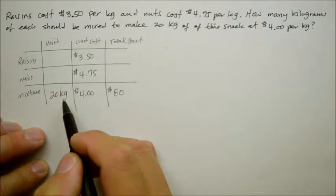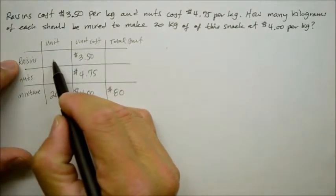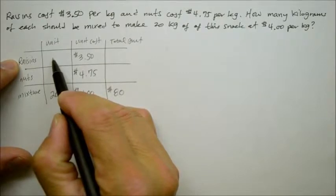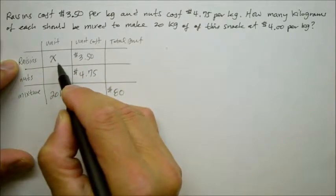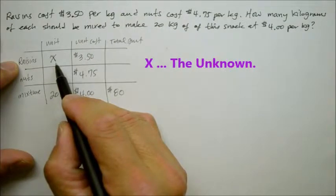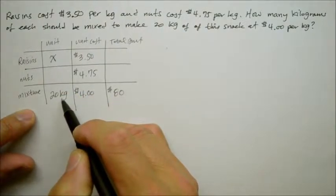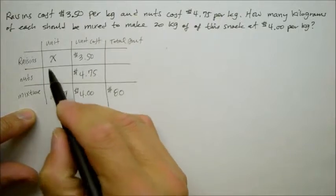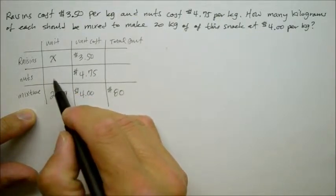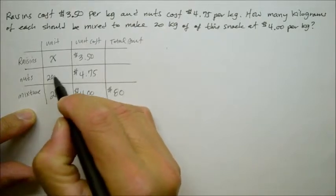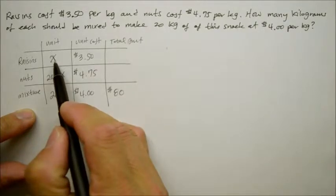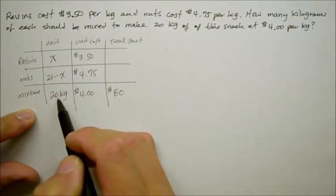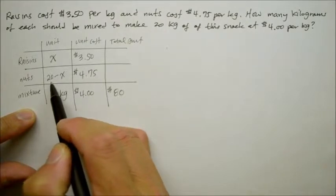For raisins, we could say we don't know. So when something is unknown in algebra, we just refer to it as X. And if raisins is X, and the total mixture is 20, isn't 20 minus that unknown X give us the nuts? So we could say 20 minus X. We don't know what raisins is, but if you take that away from the 20 total weight, that remaining will be the nuts, and we'll just leave it as 20 minus X.